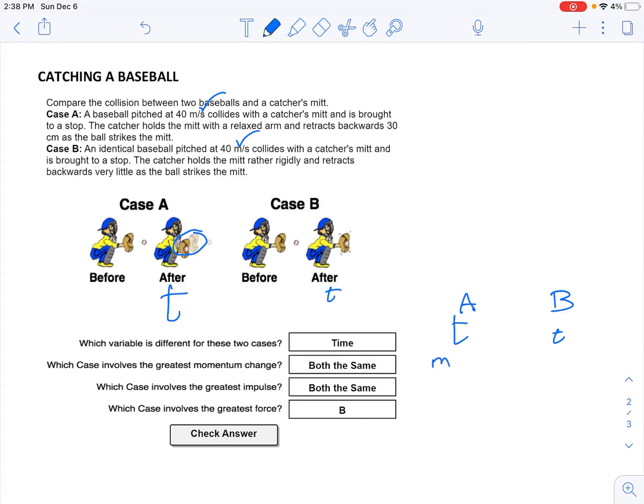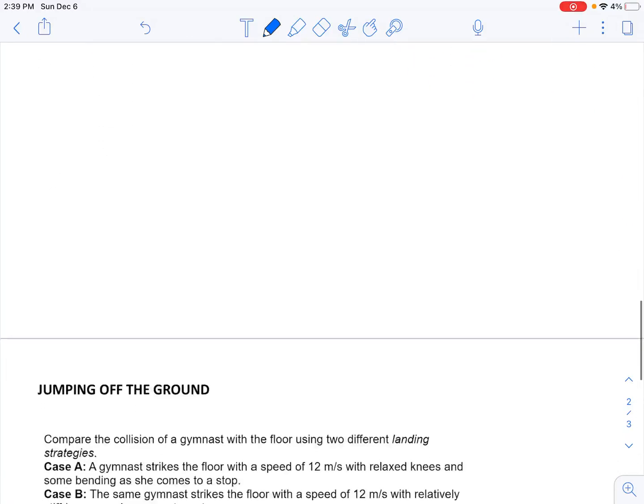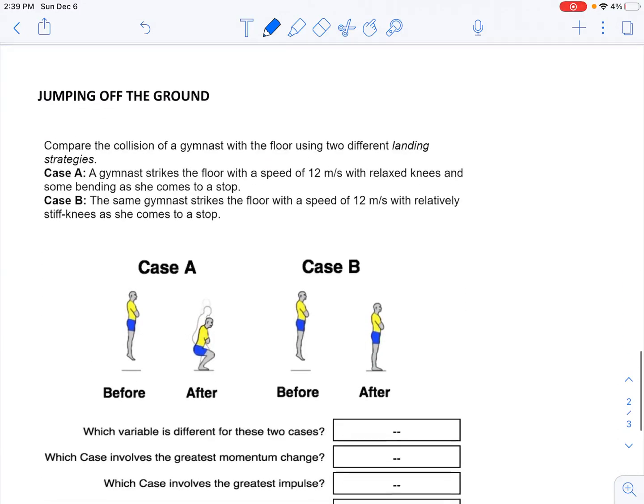Now both have the same mass and both have the same change of velocity. Well, if they both have the same change in momentum, then they both must have the same impulse. But here's the difference: you can apply a smaller force over the larger time in case A. In case B you have to supply a bigger force over a smaller time. But the combination of the force and time is the same for both A and B because you're stopping the baseball regardless.